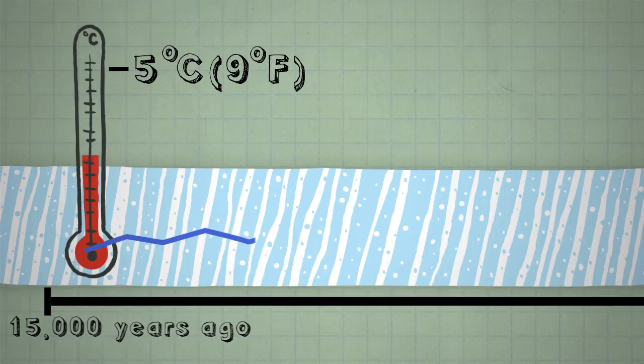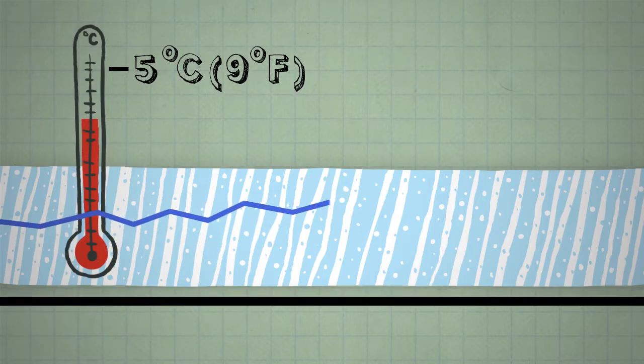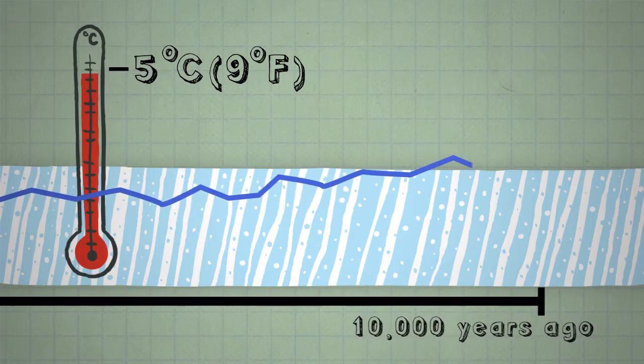Paleoclimatologists know that the Earth warmed up about 5 degrees Celsius, or 9 degrees Fahrenheit, starting about 15,000 years ago. That warming happened pretty gradually, over about 5,000 years.